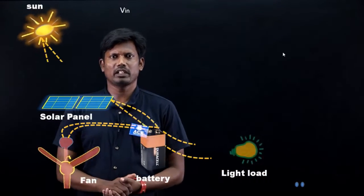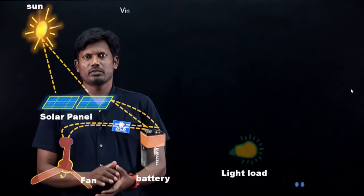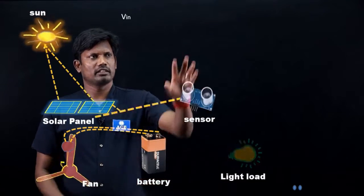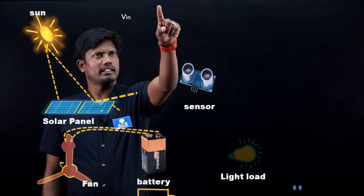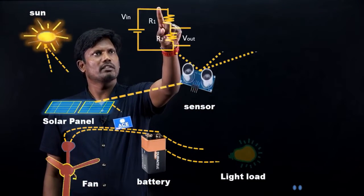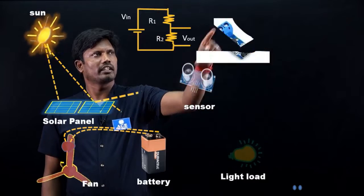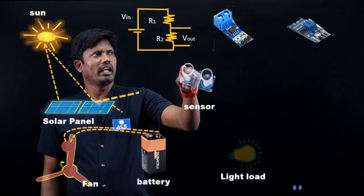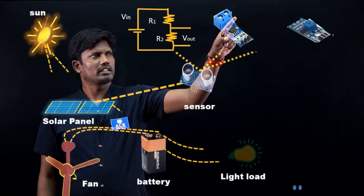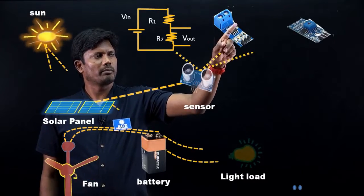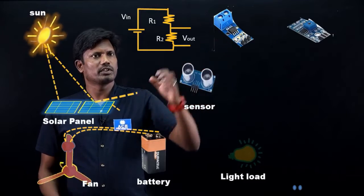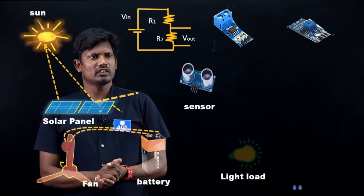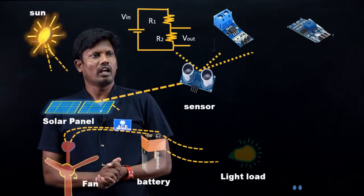Now coming to the IoT application on the solar system. I will connect sensors like a voltage sensor to measure voltage, a current sensor to measure current, and a temperature sensor to measure the temperature of the solar panel. These analog signals are fed to the microcontroller.